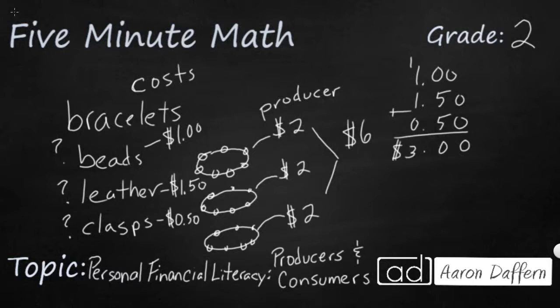So the profit is going to be calculated when we take the total amount made. So that's the $6. We're going to take away the cost. It really costs you $3 to make it. And then your profit is $3. So you made a $3 profit.